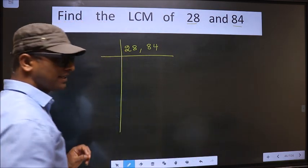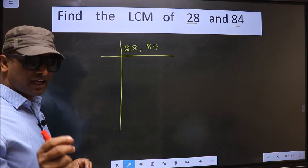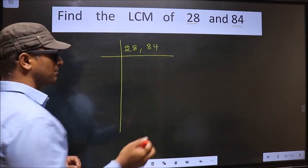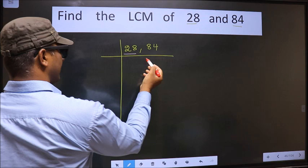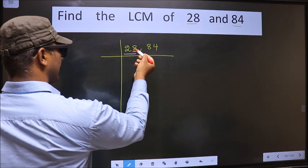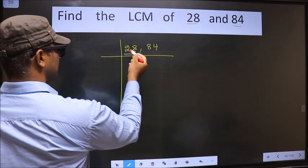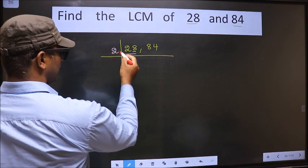Okay, next. Now we should focus on the first number, that is 28. Here last digit 8, even. So this number is divisible by 2. So we take 2 here.